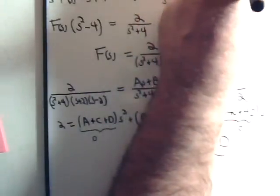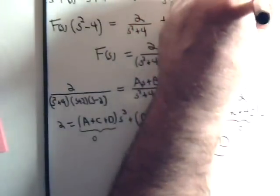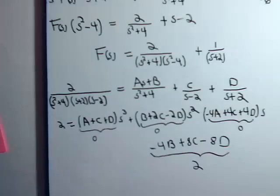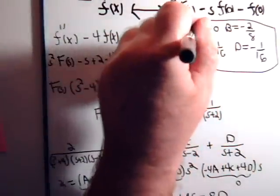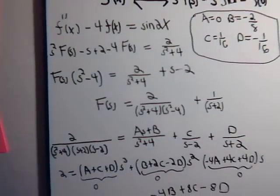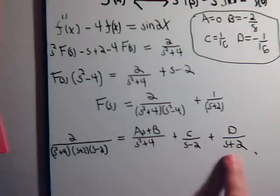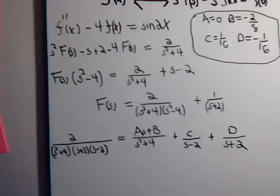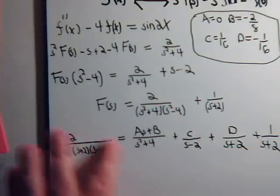B equals minus 2/8, c equals 1/16, d equals minus 1 over 16. Okay, so if we do that. Now remember, f of s equals this plus this term here, so we're just going to do this plus 1 over s plus 2 equals f of s.